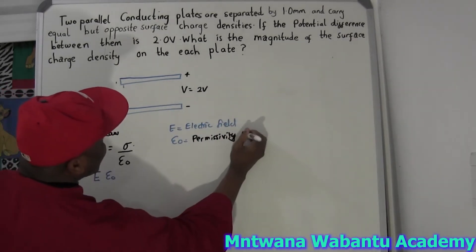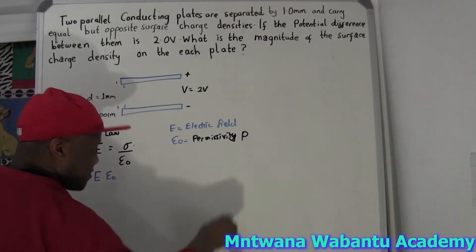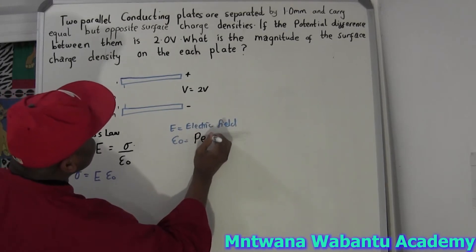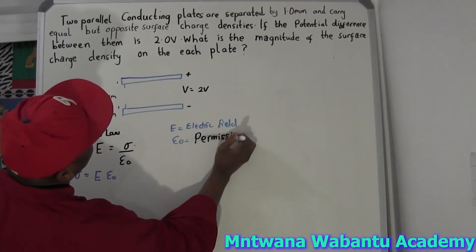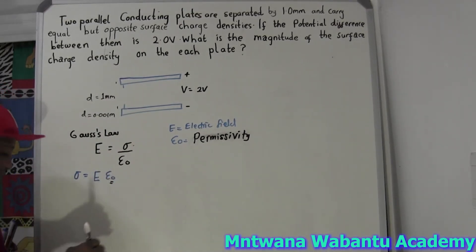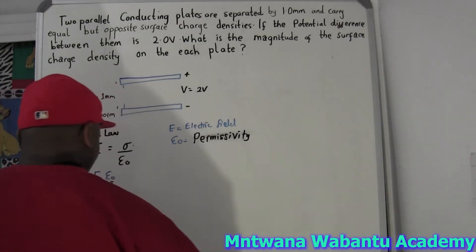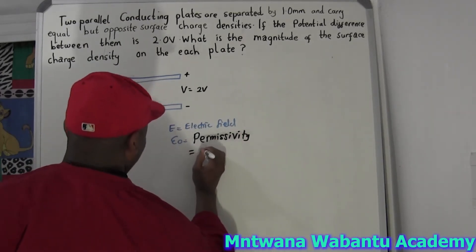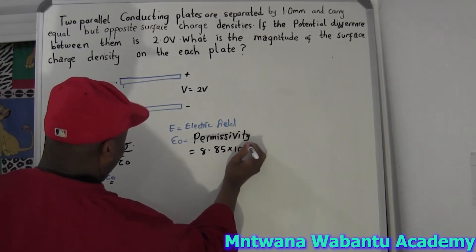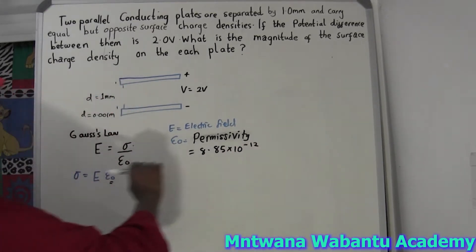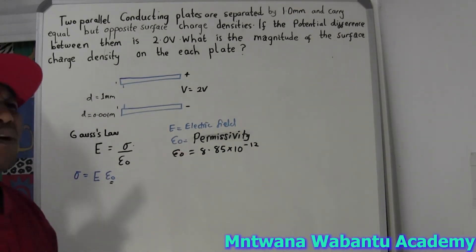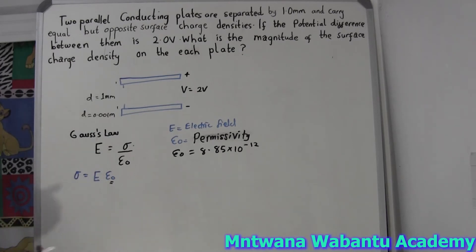Let me write this a bit bigger so you can see. The permittivity is always given — permittivity always equals 8.85 times 10 to the power of negative 12. It's always a constant, not something you have to derive. You just have to know it.